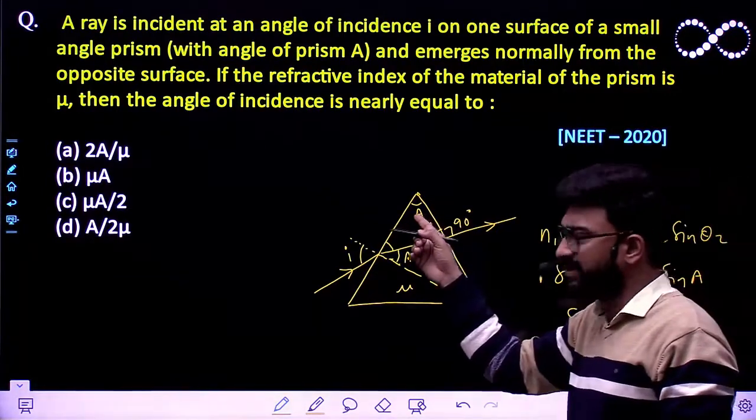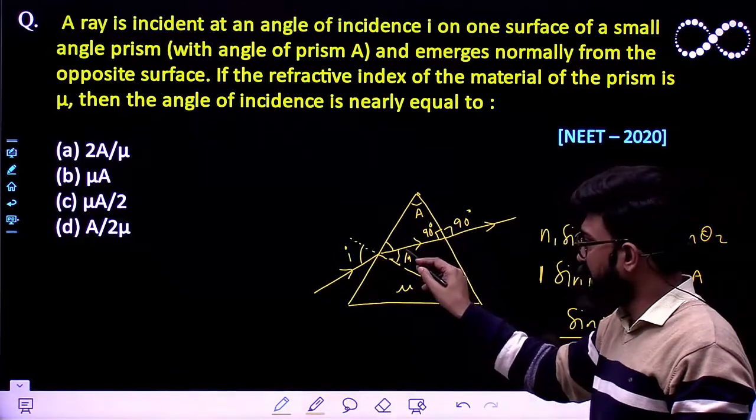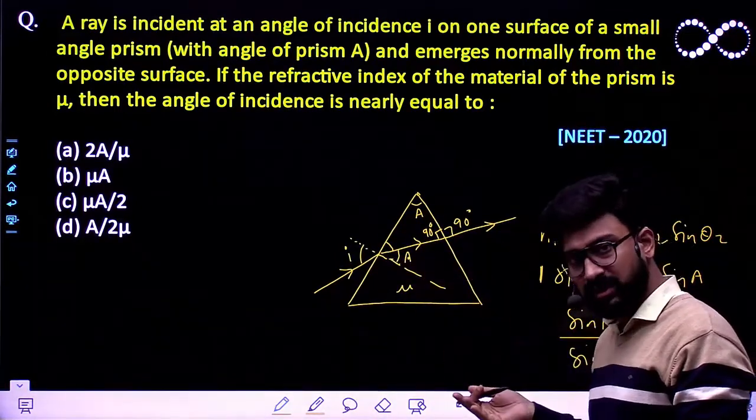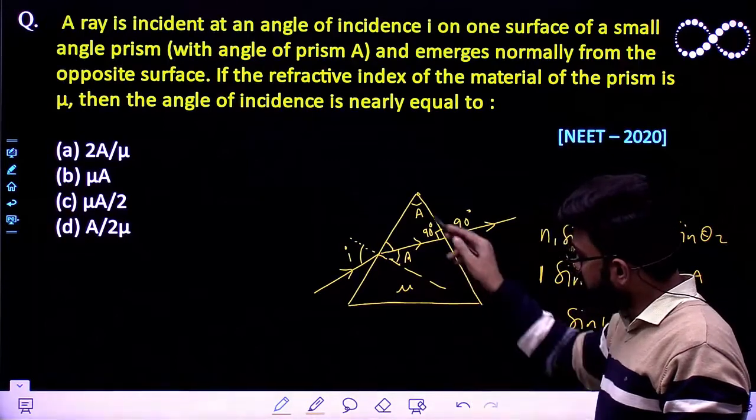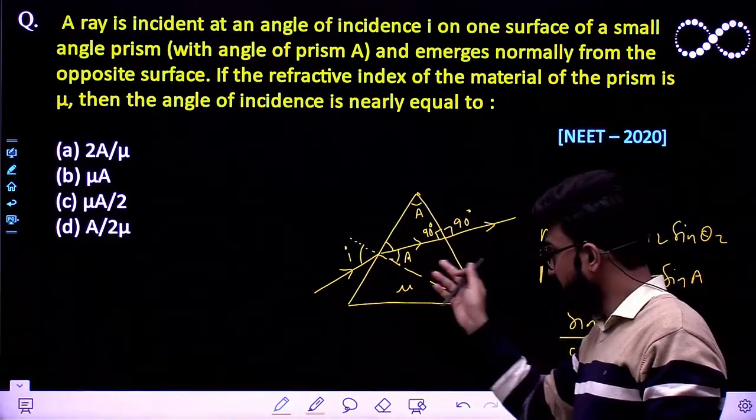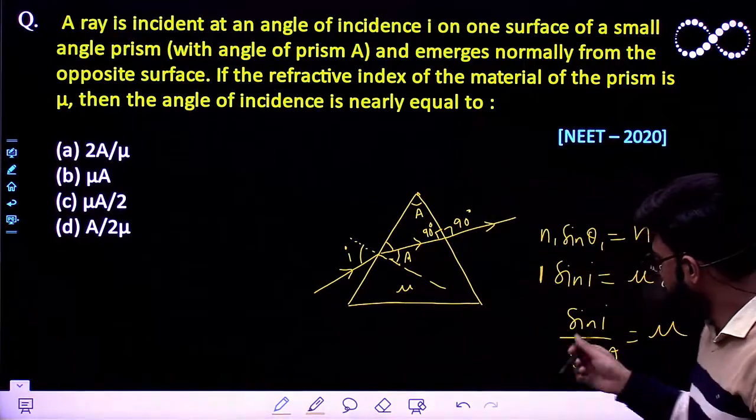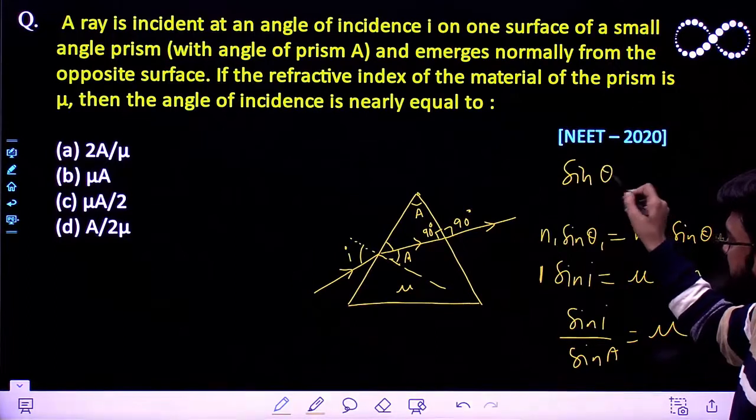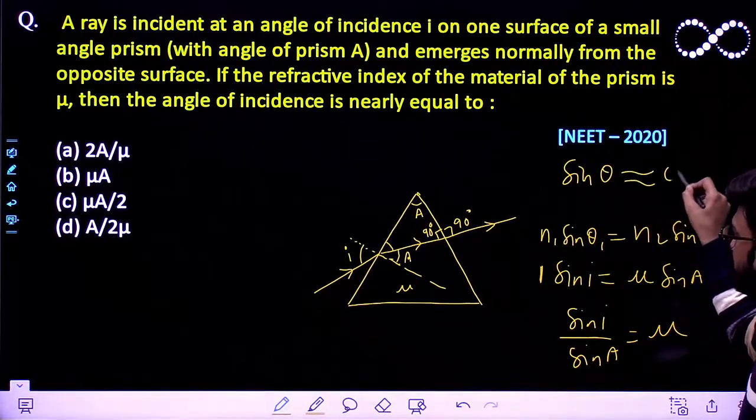Since this angle is very small, the angle of incidence would also be small. For small angles we know that sin theta is nearly equal to theta.